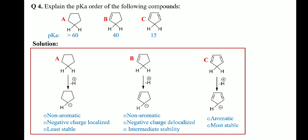Question 4: explain the pKa order of the following compounds. The pKa order can be explained based on the stability of the conjugate base — the greater the stability of the conjugate base, the higher the acidity and the lower the pKa. Among A, B, and C, the conjugate base of C is the most stable because of its aromatic character. The conjugate base of A is the least stable because the negative charge is localized. The conjugate base of B is more stable than A but less stable than C, as it is a non-aromatic species with a delocalized negative charge.